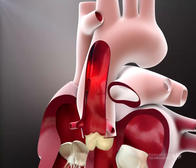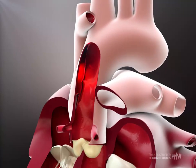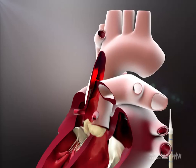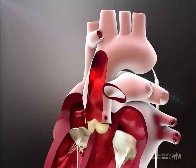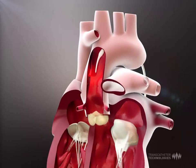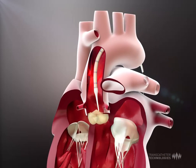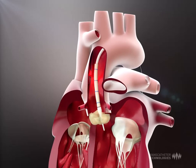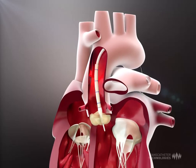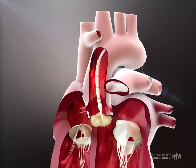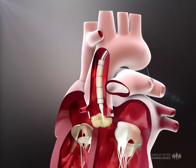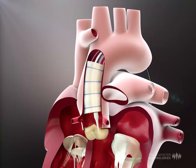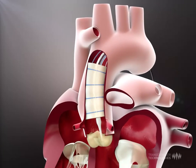In a type A dissection, the catheter is introduced through the femoral artery and retrogradely advanced via the aorta up to the sinotubular junction. The stent is carefully positioned above the coronary openings and fixed in place via precision-controlled expansion.